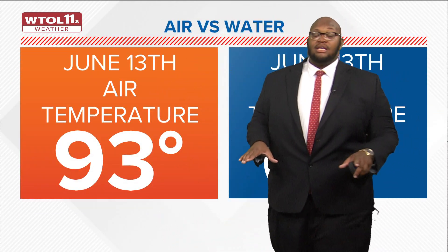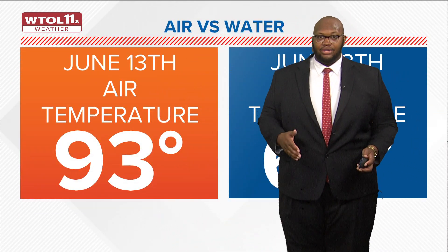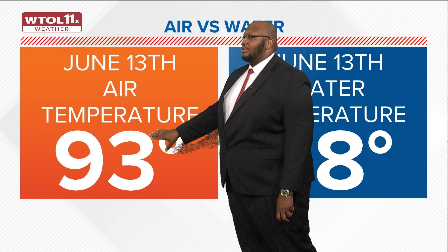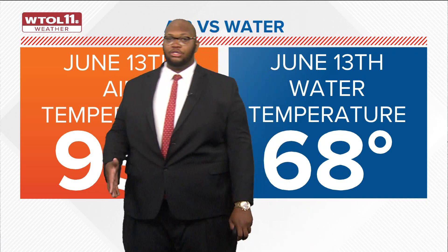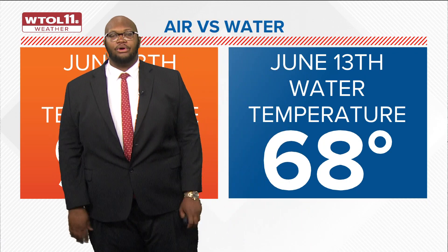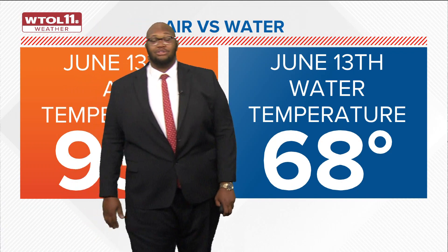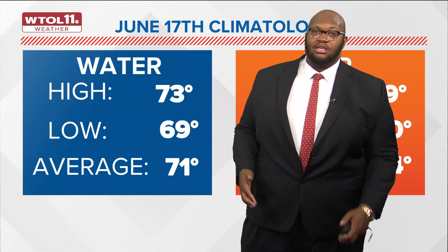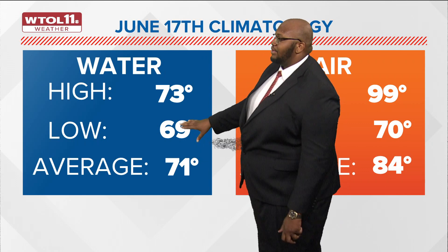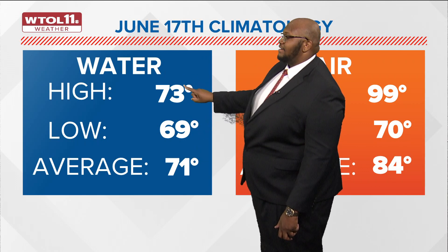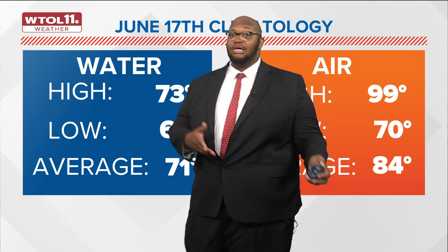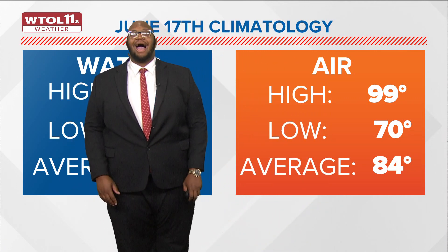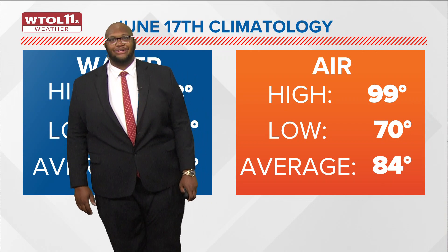For example, we saw 60, 70, and even 80 degree air days before June 13th, where temperatures reached 93 degrees — but the water temperature was almost 30 degrees colder at 68 degrees. Another example: on June 17th, the water temperature ranged from a low of 69 to a high of 73 degrees, averaging around 71 degrees. But the air temperature had a low of 70 and a high of 99 degrees.